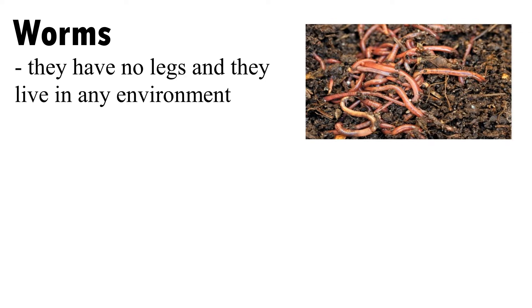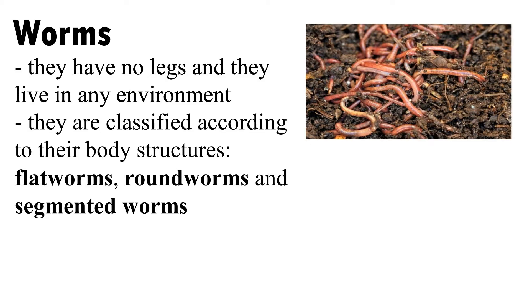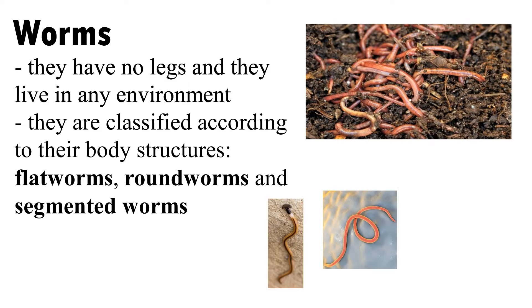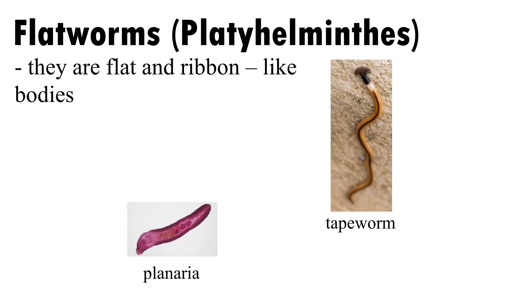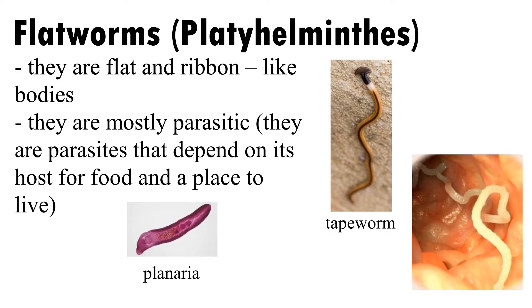Worms have no legs and they live in any environment. They are classified according to their body structures: flat worms, round worms, and segmented worms. Flat worms have flat and ribbon-like bodies. They are mostly parasitic — parasites that depend on their host for food and a place to live.